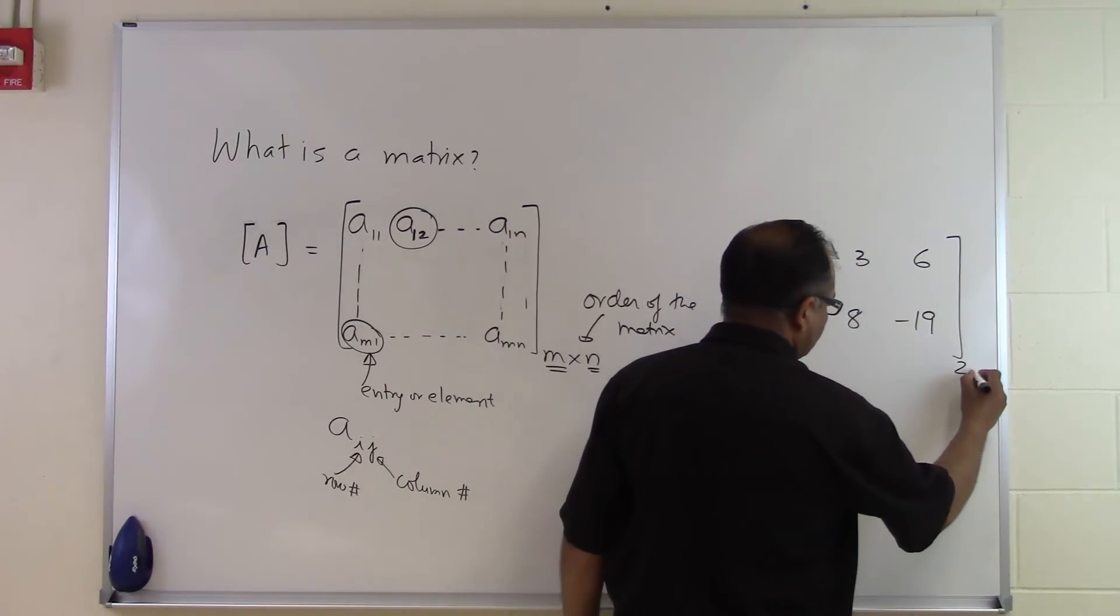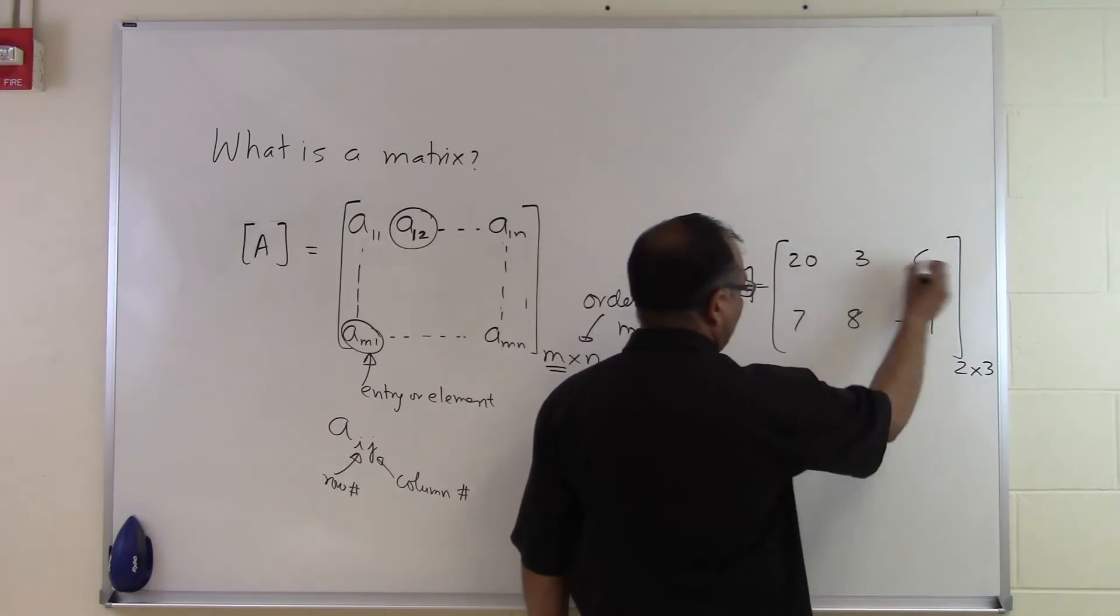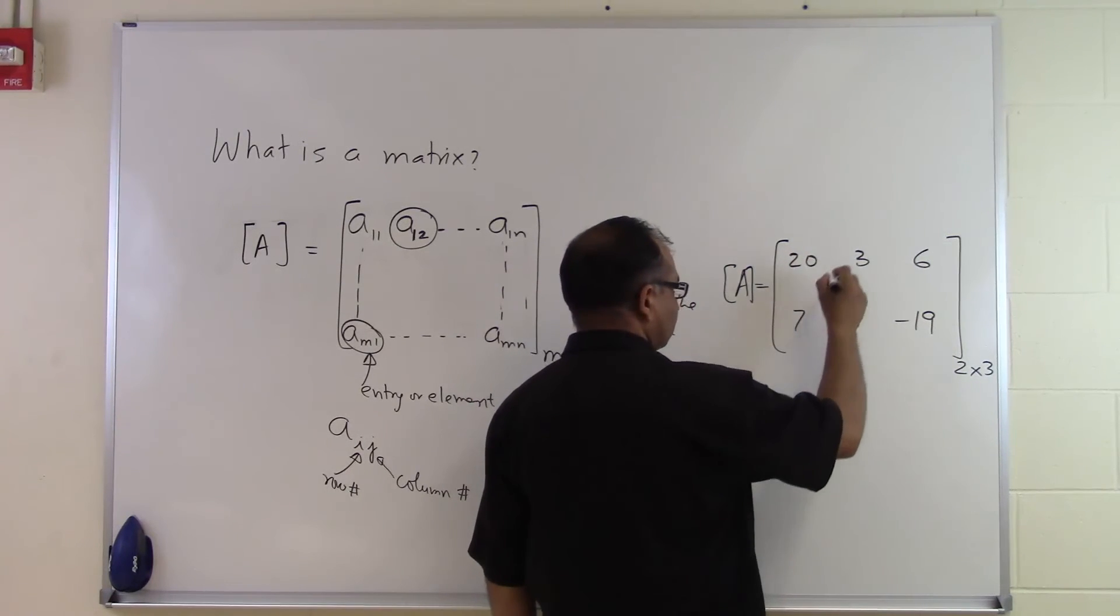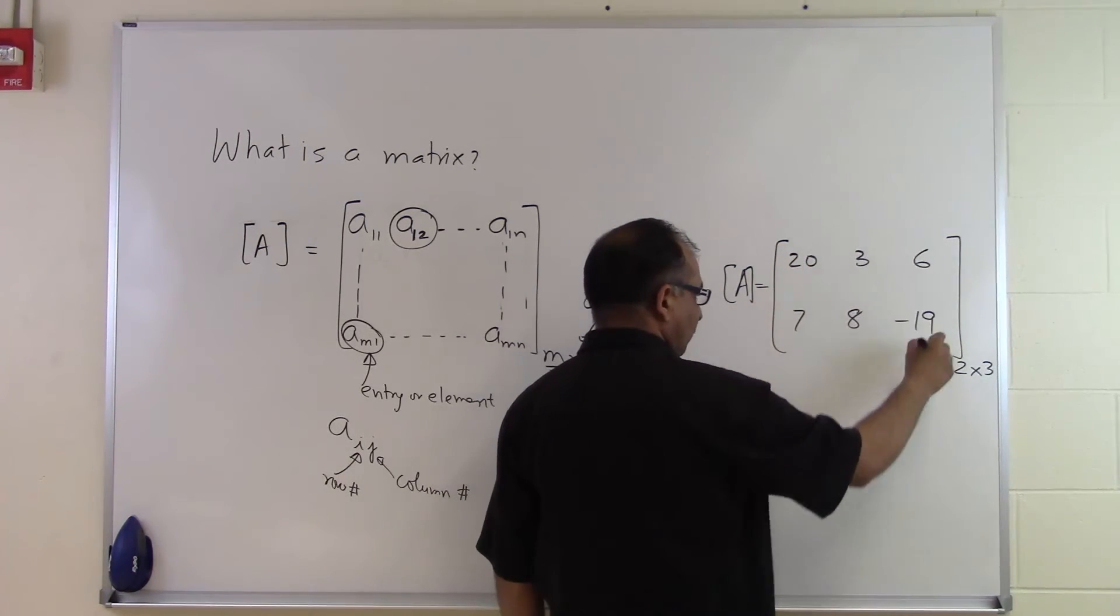We have two rows and three columns because we have one row, two rows, and then we have three columns: one, two, three columns.